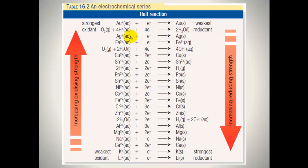Here's an example of an electrochemical series taken from the textbook. The strongest oxidant will always be found at the top left hand side — in this instance, gold ions.